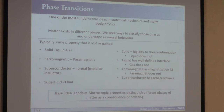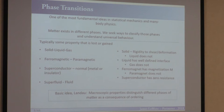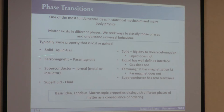Phase transitions are really one of the more fundamental ideas in statistical mechanics — things exist in different phases. The idea, basically proposed by Landau, is that there must be some macroscopic properties of a system which distinguish different phases of matter as a consequence of whatever ordering is going on. When you go through a phase transition, there's either some property gained or lost. In solid-liquid-gas transitions, when you're solid you have rigidity to shear deformation; a liquid does not — it just flows. When a liquid has a well-defined interface, a gas does not.